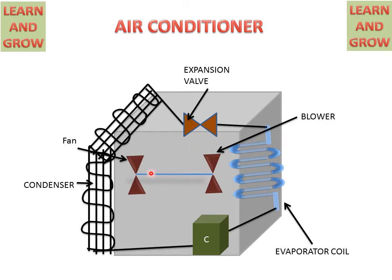Inside the box we have two fans. This fan gives air to cool the condenser coil, and this other fan or blower gives air to the room, which passes through the evaporator coil and cools the space we want cooled.